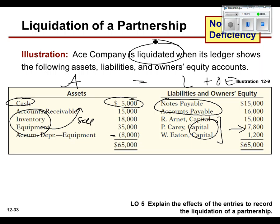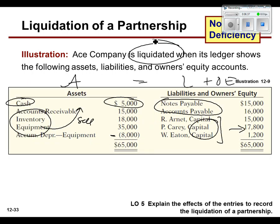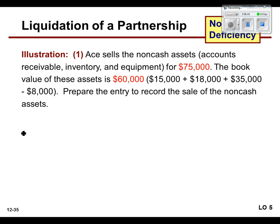Here we go — four-step process. First, we need to sell off these non-cash assets. ACE sells all of the non-cash assets. Cash is already cash, so we're going to sell off the accounts receivable, the inventory, and the equipment for $75,000.